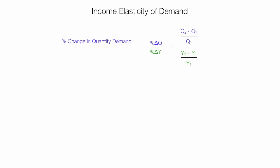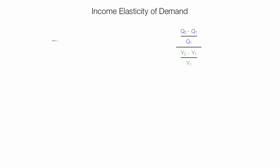Income elasticity of demand is the percent change in quantity demanded divided by the percent change in income. I'm going to make a calculation now for you.